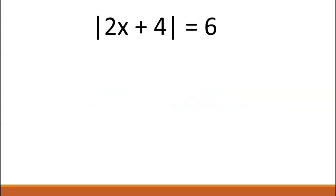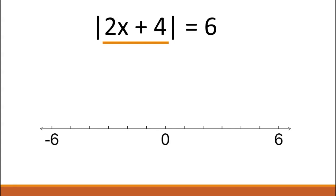Consider the equation: the absolute value of two x plus four equals six. This equation is asking you to find the solutions for x such that the distance of the expression inside the absolute value — in this case, two x plus four — from zero is equal to six.